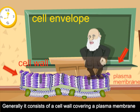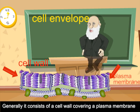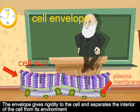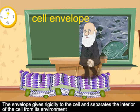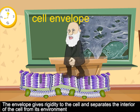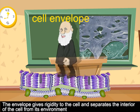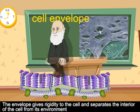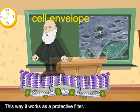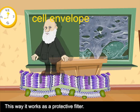The cell envelope encloses the cell. Generally it consists of a cell wall covering a plasma membrane. The envelope gives rigidity to the cell and separates the interior of the cell from its environment, working as a protective filter.